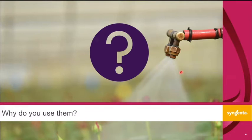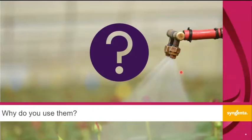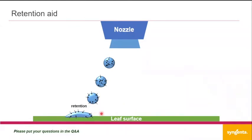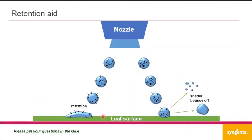So for a couple of slides, I've talked about what an adjuvant should do: retention aid, improved coverage, and improved uptake. Let's have a look at exactly what this is and how it works. The first one is retention aid. After the droplet leaves the nozzle, it's all mixed up, and before the droplet hits the leaf surface, it should settle in place again — especially with adjuvants. The leaf tension needs to be reduced so it won't bounce off, because the risk of bouncing off of the droplet is really high.